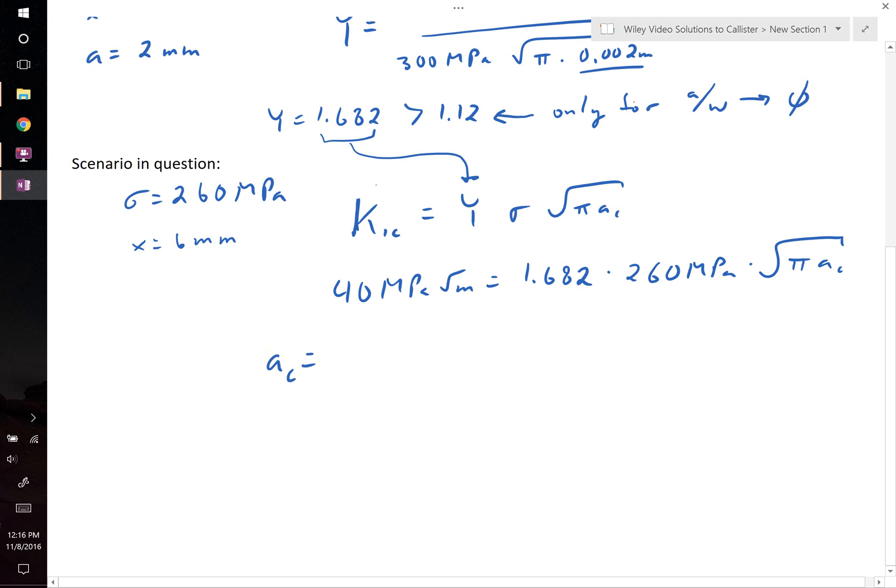Critical crack length, we find, should be equal to 40 MPa root meters over 1.682 times 260 MPa. This quantity needs to be squared, and the whole thing is divided by pi.